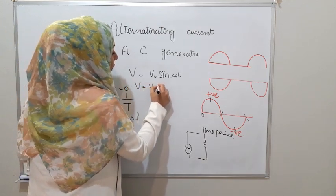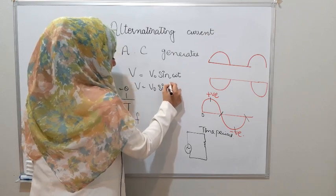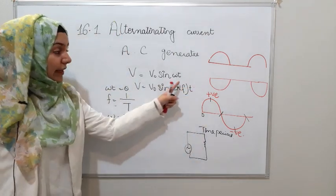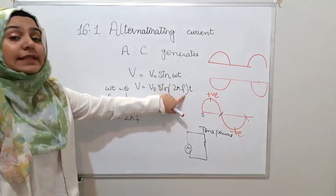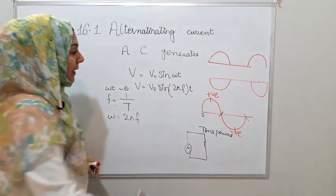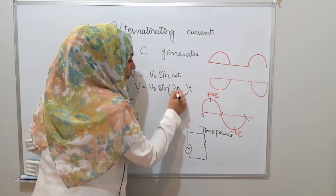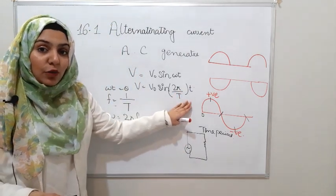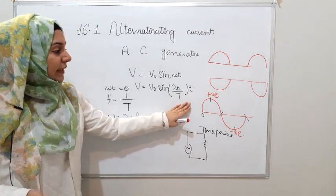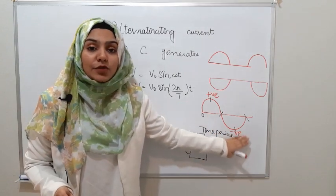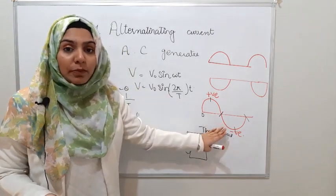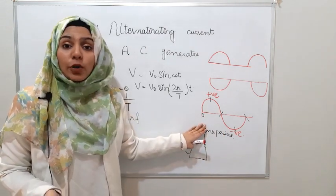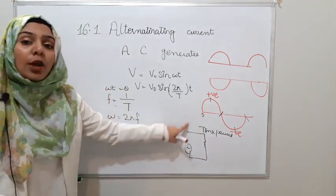Applying ω = 2πf, the voltage equation becomes V = V₀ sin(2πft). We can also replace f with 1 over T, giving V = V₀ sin(2πt/T). This equation explains that the voltage waveform behaves the same way as current — it also behaves as alternating voltage, which is why polarity changes and current also changes its direction over time.